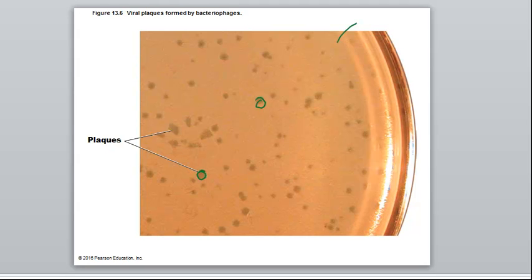A plaque is an area where the phages have destroyed the bacterial growth. So the lytic cycle infects bacteria. It lyses bacteria.